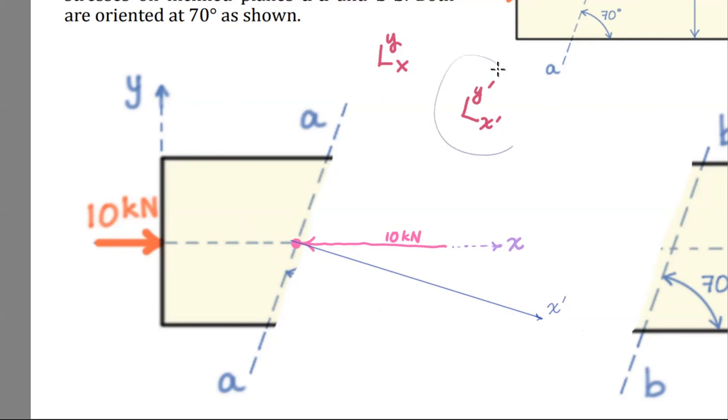Now we're going to use the right hand rule to determine the location of Y prime. Does it run up the plane or down the plane? And the answer is, it goes up the plane like this. So now we've got our X prime and Y prime in the picture.